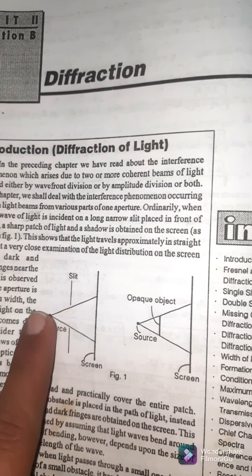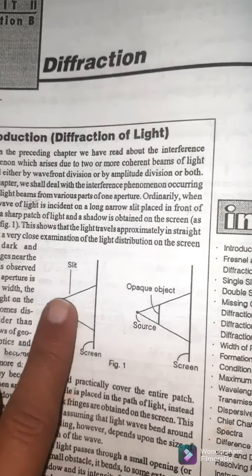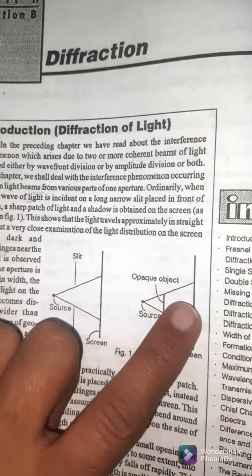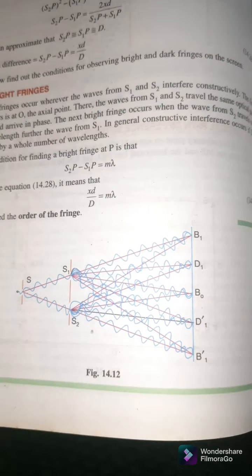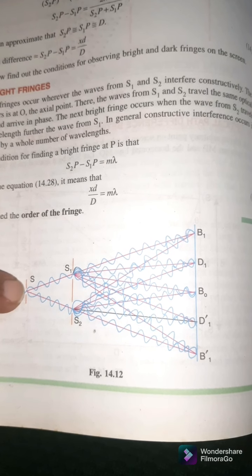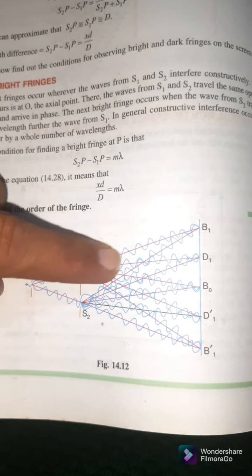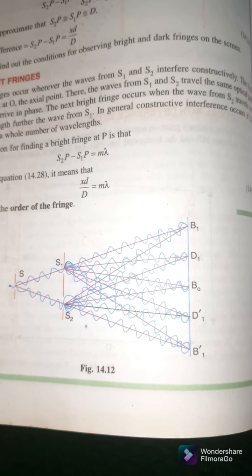When we observe maximum or minimum on the screen, we call it the diffraction pattern. Pictorially, you can see light from the slit going under obstacles, and alternate dark and bright fringes form the diffraction pattern. In the case of interference, light comes from two sources and you can see bright and dark fringes forming the interference pattern.